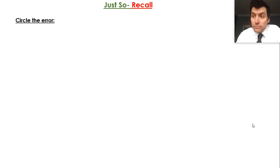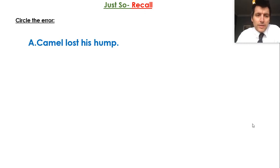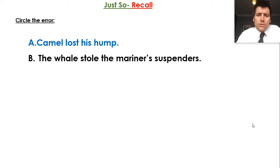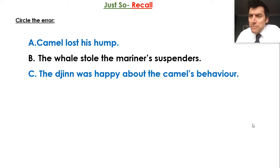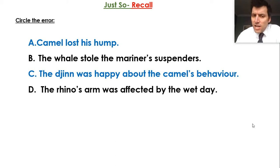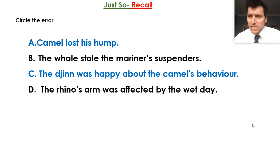Occasionally I'll make mistakes. In these sentences, there's at least one error in each one. So: the camel lost his hump — where's the error? The whale stole the mariner's suspenders — where's the error? The jinn was happy about the camel's behaviour — where's the error? And finally, the rhino's arm was affected the wet day. Circle on your sheet the error for each one of these, please.